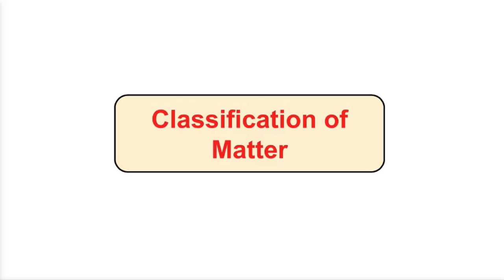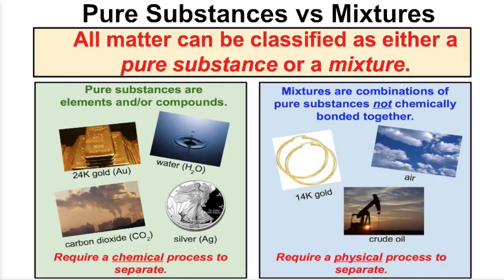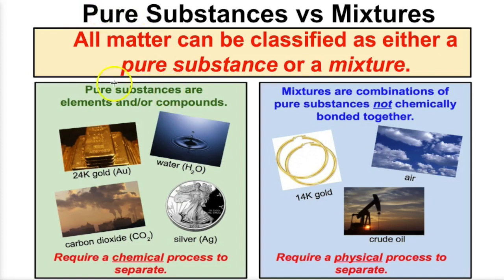Hey guys, this is Mr. Millings and today we're going to learn about classification of matter. All matter can be classified into two main categories: pure substances and mixtures. Let's take a look at pure substances first.